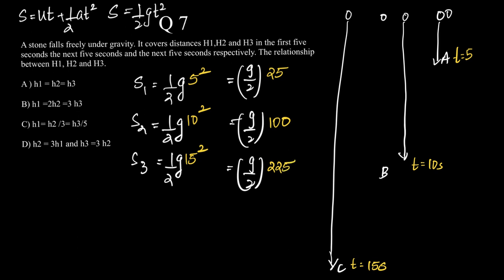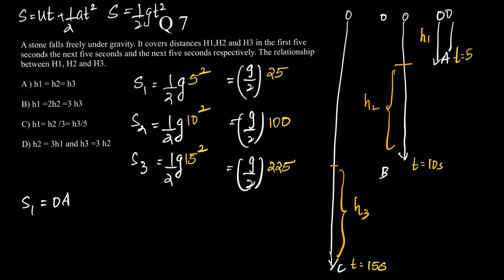Now coming to the solution part. Let Oa be h1 — that is, let this first interval of distance be h1, let the next interval be h2, and let the next interval be h3. So S1 is basically Oa, which means Oa equals h1 equals (g/2)·25.